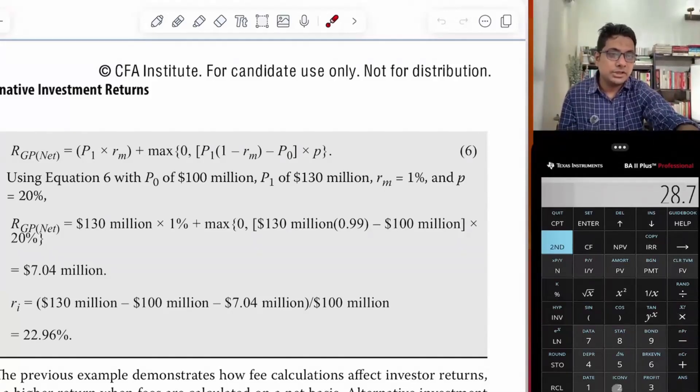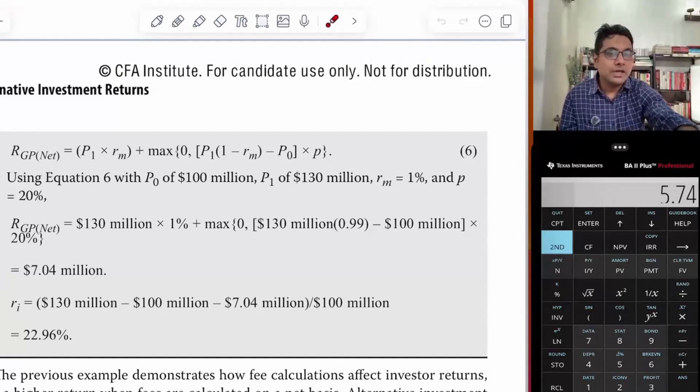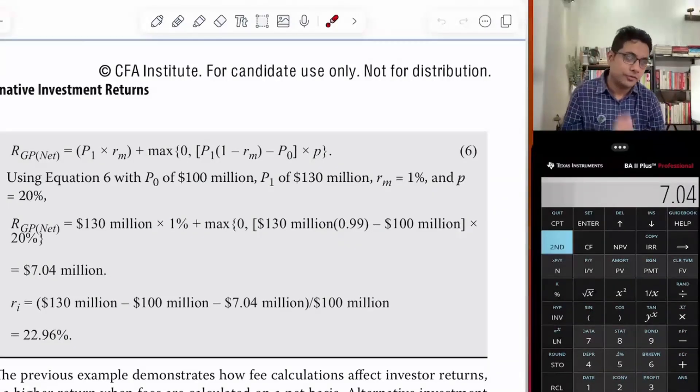On the net return, we calculate the 20% incentive fee, which is 5.74. Adding the management fee of 1.3, the total GP return is 7.04.